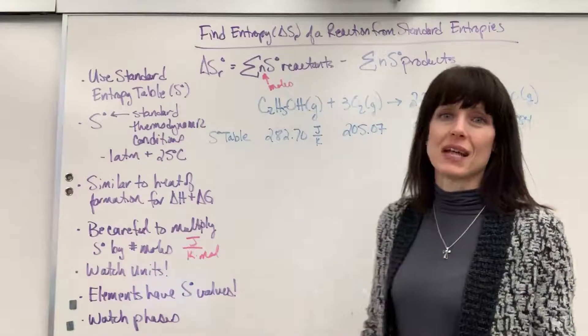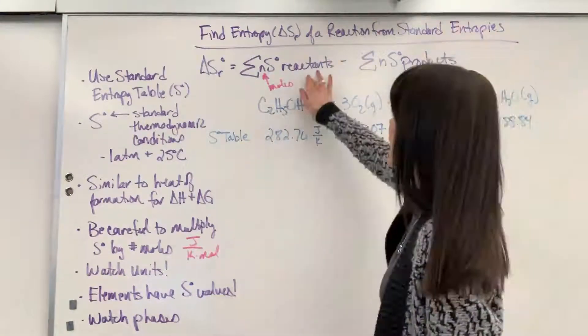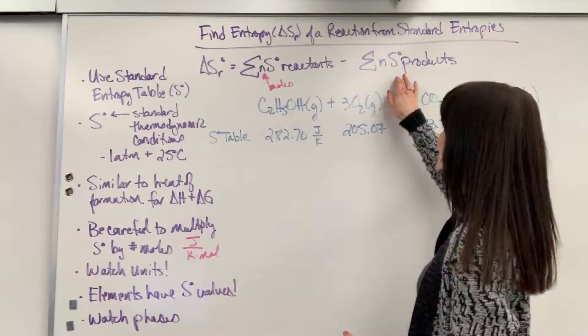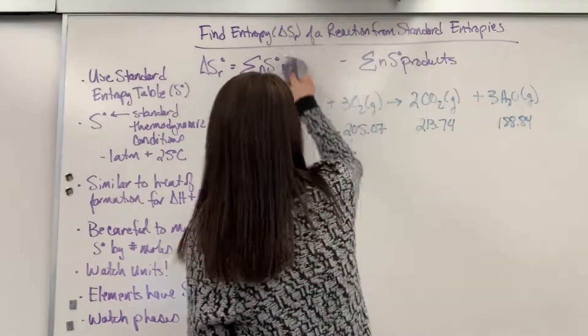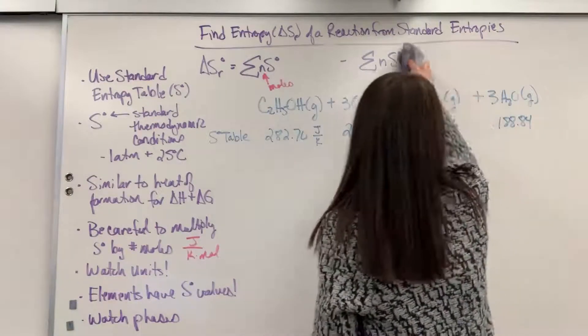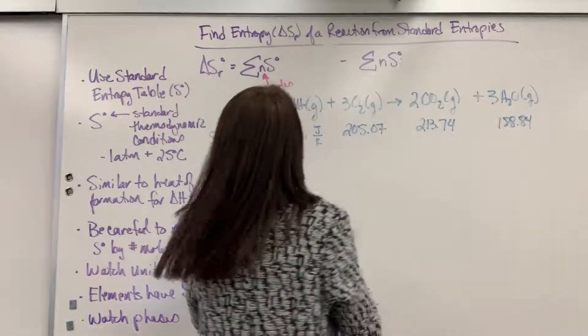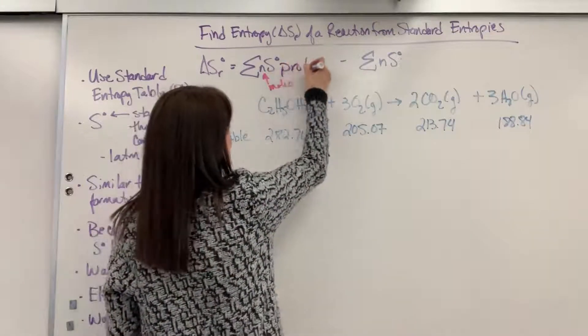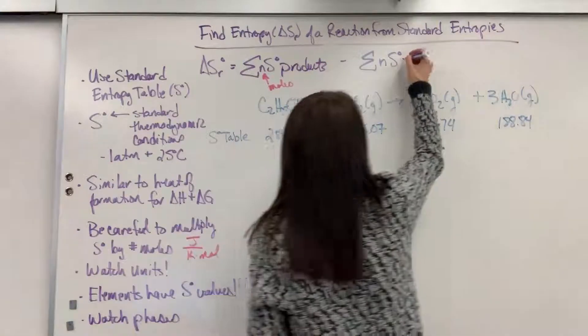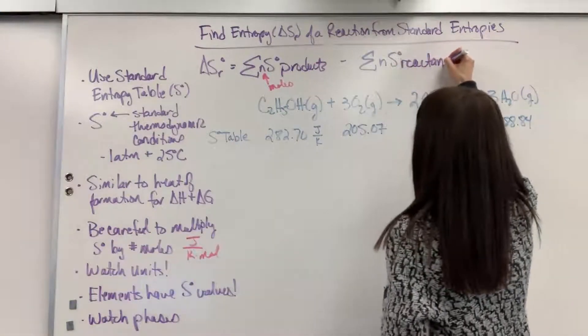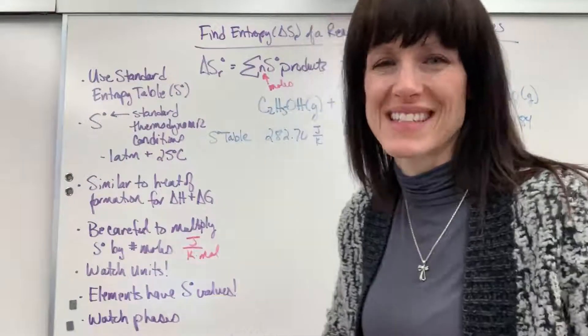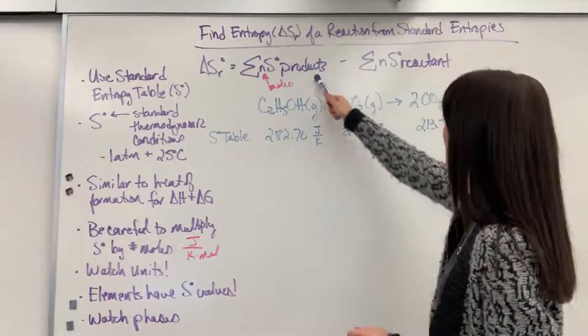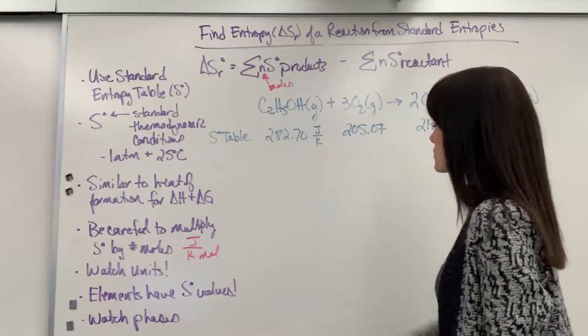So it's always reactants minus products. There are very few cases in chemistry where we don't do final products minus initial. Or excuse me, oh, products minus reactants. So sorry, you guys. Let's change that right now. It's always products minus reactants. Minus reactants. I did grade 180 FRQs last night. Maybe that's why I made that mistake. Okay, so products minus reactants.